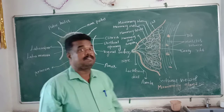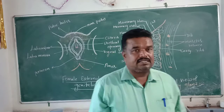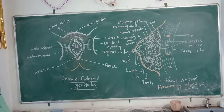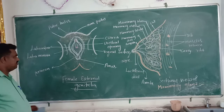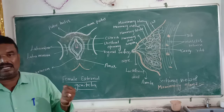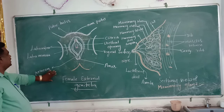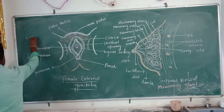In this class we are going to discuss about female external genitalia. In females, the external genitalia is present surrounding the vagina. It mainly consists of different parts. The first one is vulva.